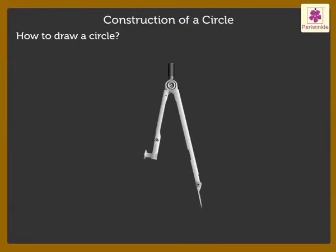Let's now learn how to draw a circle. To draw a circle, we use a compass. A compass has two arms: a metal arm and a pencil arm connected by a hinge.